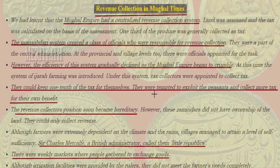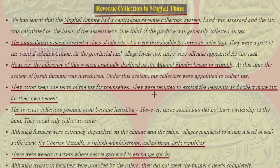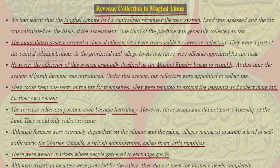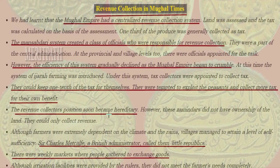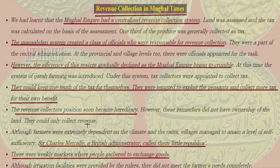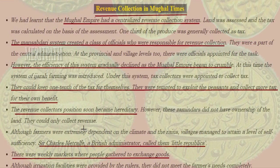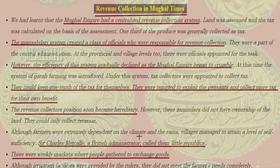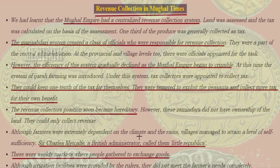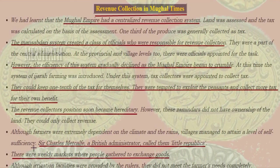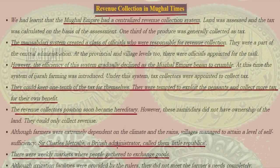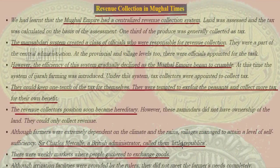Under the Ijara system, tax collectors were appointed to collect the tax. They could keep one tenth of the tax for themselves, so they were tempted to exploit the peasants and collect more tax for their own benefit. Revenue collectors' positions became hereditary. Zamindars did not have ownership of the land; they could only collect the revenue.